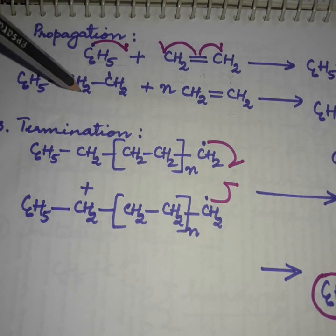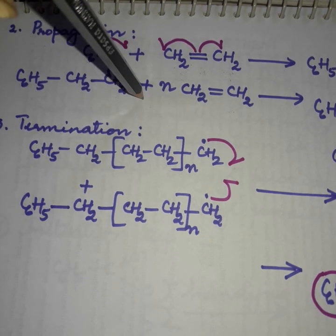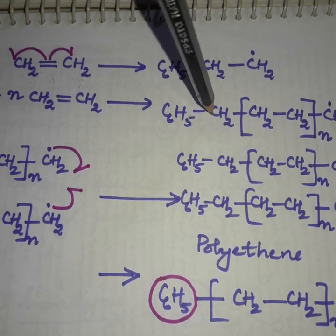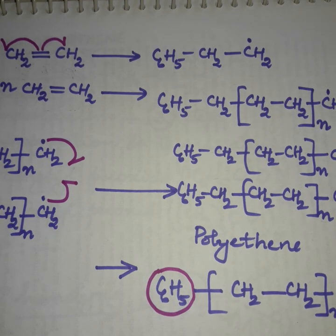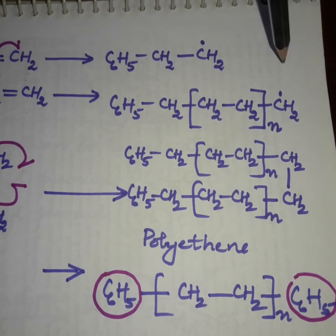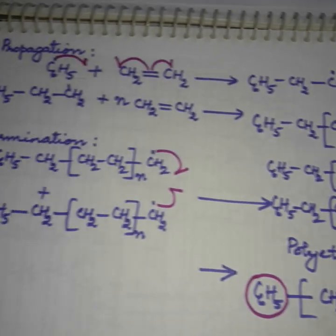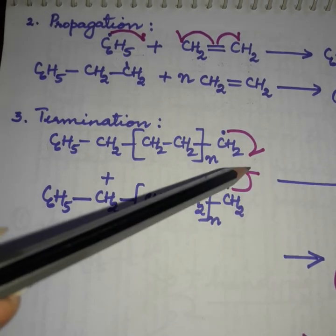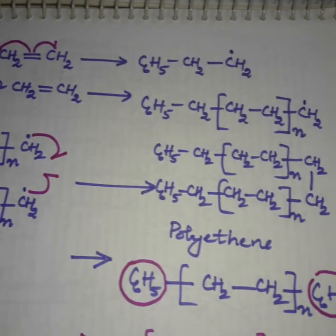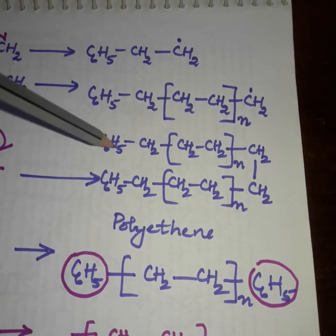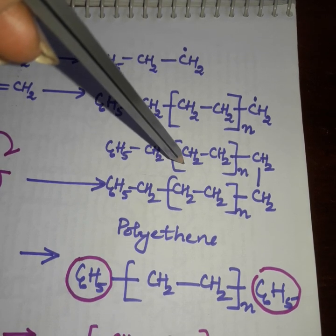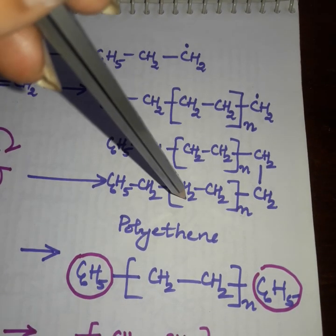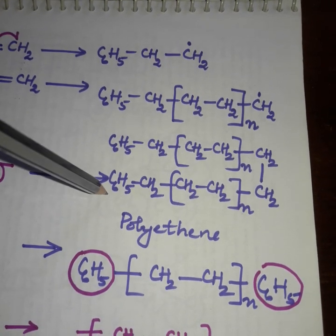C6H5-CH2-CH2-CH2• reacts with N molecules of ethene, resulting in C6H5-(CH2-CH2)N-CH2•. In the final termination step, two such long chain free radicals join together to form the long chain polymer: C6H5-(CH2-CH2)N-CH2-CH2-(CH2-CH2)N-C6H5.